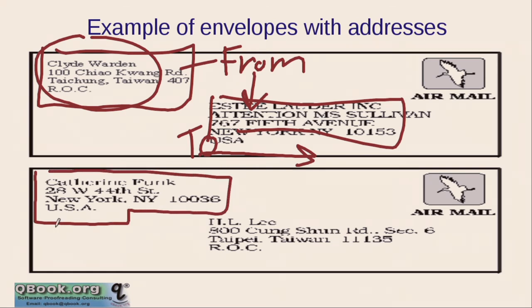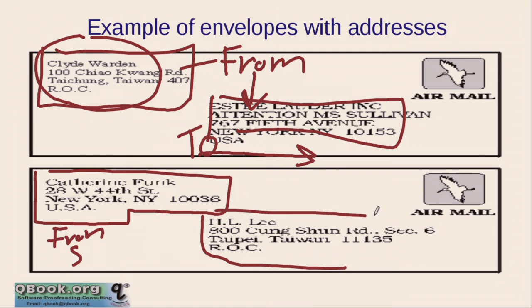So the upper-left area is who the letter is from — this is called the sender. And the center-right area is who the letter is to — this is the receiver.